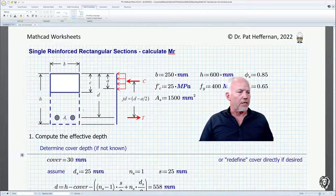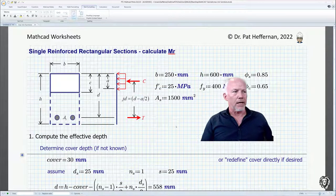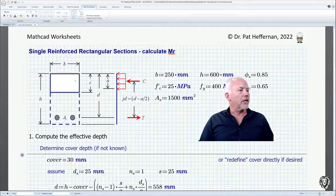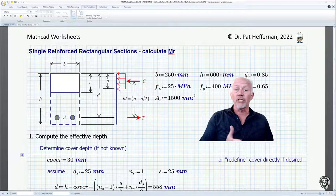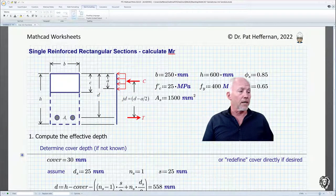Now, I've got a MathCAD sheet open. This is just a calculation of capacity for reinforced concrete beam. But you notice that I have this image in here, which makes the issues or all the definition of variables really crystal clear.